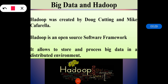So talking about big data and Hadoop. Now due to the advent of new technologies, devices and communications, which are nothing but means like social networking sites, the amount of data produced by mankind is growing rapidly. The amount of data produced by us from the beginning of time till 2003 was almost 5 billion gigabytes. The same amount was created in every 2 days in 2011, and in every 10 minutes in 2012, and the rate is still growing enormously. So Hadoop was created for big data.